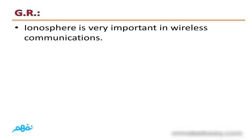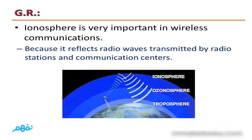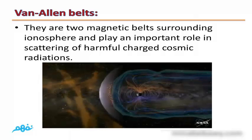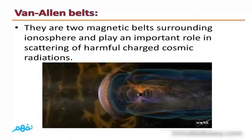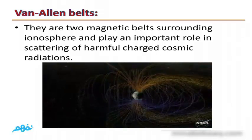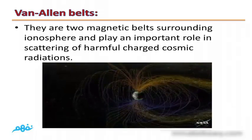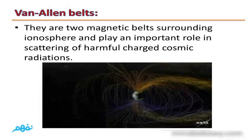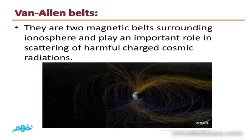The Ionosphere is very important in wireless communications because it reflects radio waves transmitted by radio stations and communication centers. There are also two magnetic belts surrounding the Ionosphere, which play an important role in scattering harmful charged cosmic radiations.